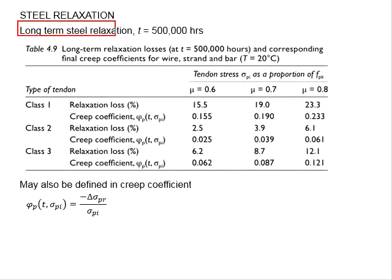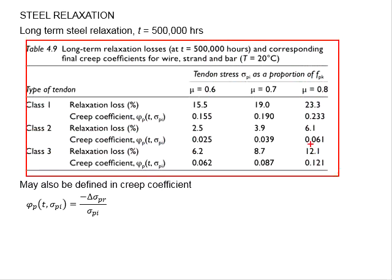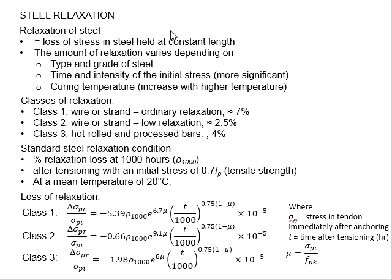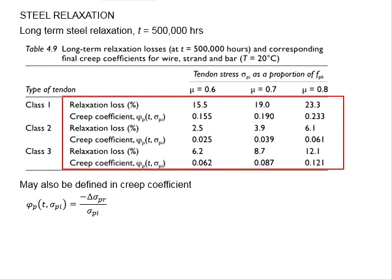And the long-term steel relaxation is referring to 0.5 million hours after stressing. This table gives the long-term relaxation losses and the corresponding final creep coefficient of the tendon of class 1 to 3. The μ here, which is the stress in tendon divided by its fpk, can range between 0.6 to 0.8. And the percentage of losses due to the relaxations and also creep coefficients are given here.